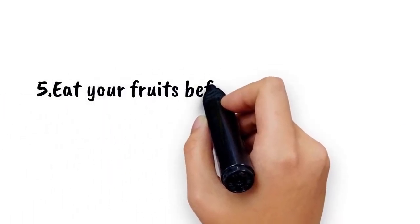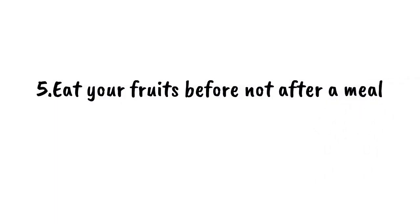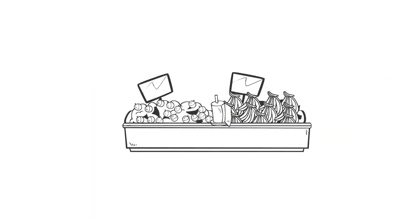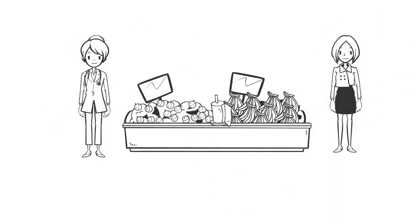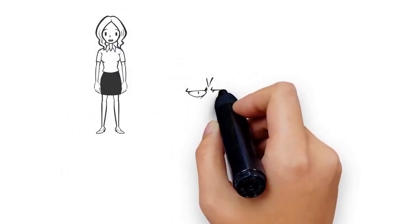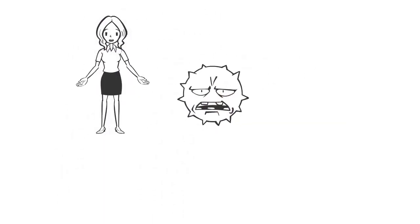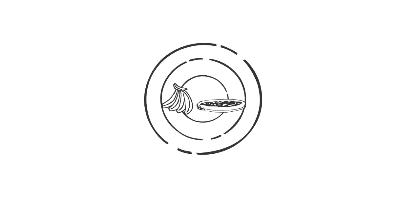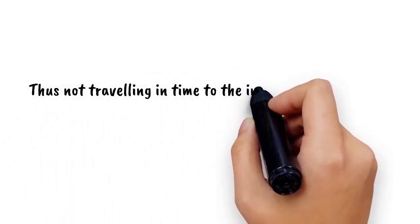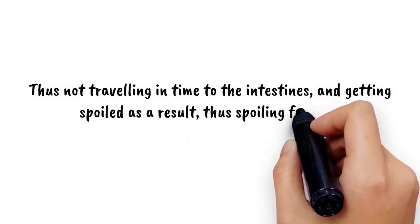Number 5: Eat your fruits and vegetables before, not after a meal. Fruits are recommended by almost everyone, but few know that fruits right after a meal can be harmful. Fruits are the easiest to digest and take just 20 minutes to travel from your stomach to intestines, where they are finally digested, with bananas and dates being exceptions. When you eat fruit after a meal, it gets stuck with the food, not traveling in time to the intestines and getting spoiled as a result, thus spoiling the food too.